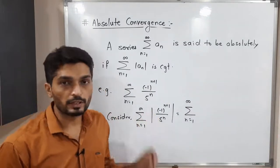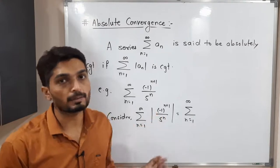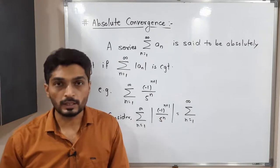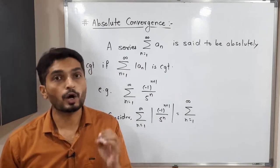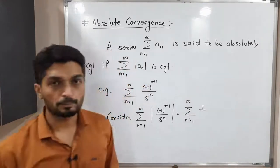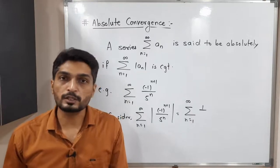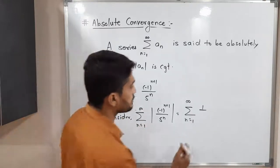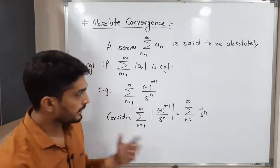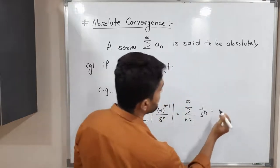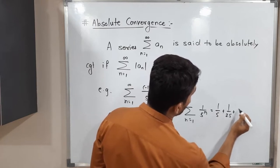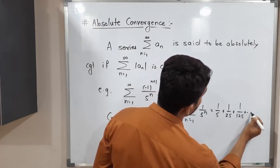When you have this type of ratio, you can take the modulus separately for numerator and denominator. The numerator (-1)^(n+1) has value either +1 or -1, but its modulus is always 1. The denominator 5^n is always a positive real number, so it stays as 5^n. Expanding the series: for n=1 we get 1/5, n=2 gives 1/25, n=3 gives 1/125, and so on.